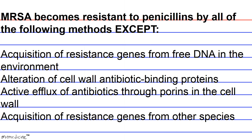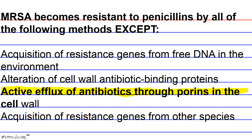The passage mentions that MRSA can acquire DNA from other species existing in the environment, so both answer choices D and A are out. The DNA encodes altered penicillin binding proteins, so answer choice B is also out. Although employed by other types of bacteria to overcome other types of antibiotics, active efflux of penicillin is not employed by MRSA. The correct answer is C.